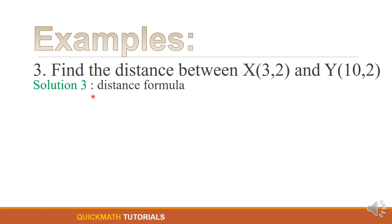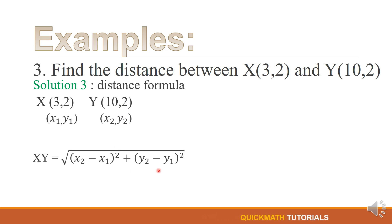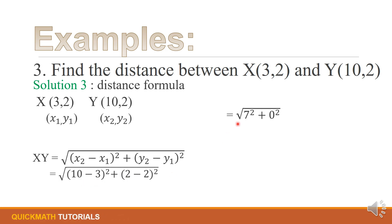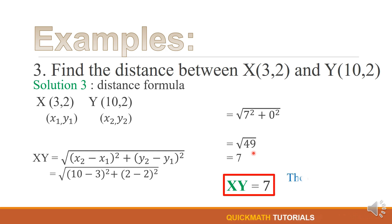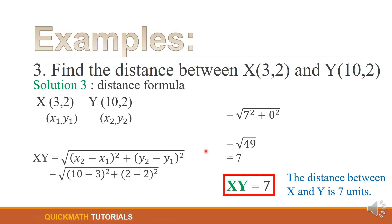For solution number 3, we can use the distance formula. By substitution, x sub 2 is equal to 10, x sub 1 is 3, y sub 2 is 2, and y sub 1 is 2. 10 minus 3 is 7, and 2 minus 2 is 0. 7 squared plus 0 squared gives 49, and the square root of 49 is 7. Therefore, the distance between X and Y is 7 units. So, either way, you can use solution number 1, solution number 2, or solution number 3.